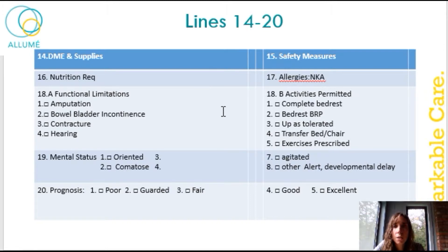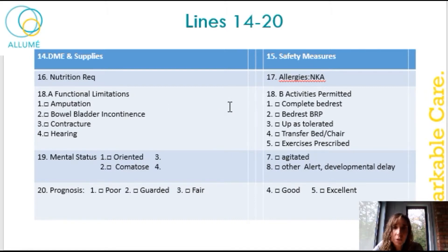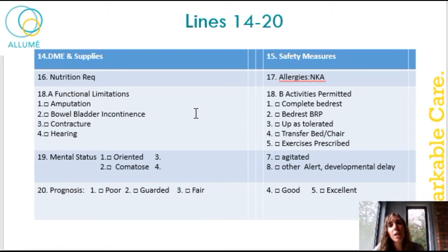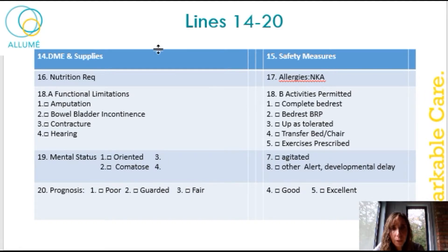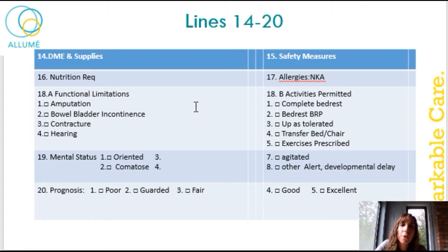Sixteen is the nutrition — it starts here and continues on. Seventeen is the allergies, very important to have on the first page. 18A is the functional limitations. I just made a small example here of some of the things that you will find, but there are more options on the real care plan. I gave examples of whether a patient has an amputation, bowel and bladder incontinence, any contractures, or any hearing problems.